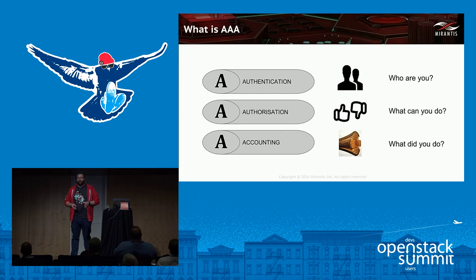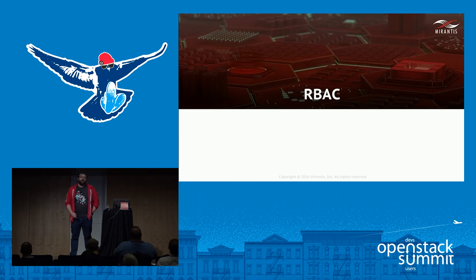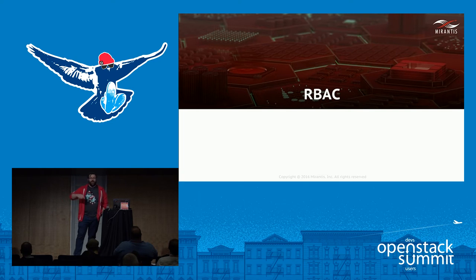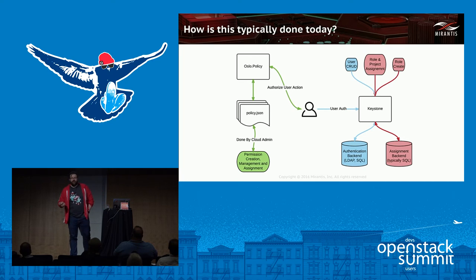RBAC — role-based access control. At some point in our lives we've all dealt with it. Those of you who've been around as long as I have have probably dealt with various group-level systems like directories, LDAP, or OUs — those are all role assignments. Within OpenStack today, every single project API does its own policy checking. The policy checking is done through the Oslo policy enforcer class, and that policy checking is based on a flat file stored on the API server.